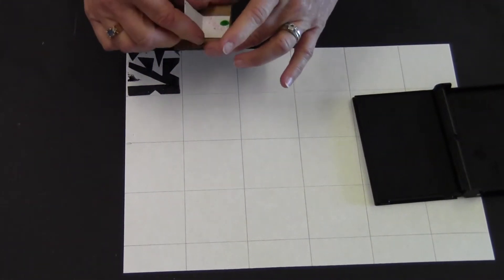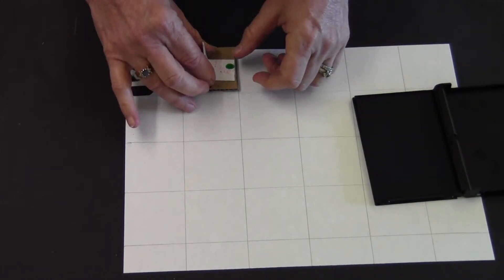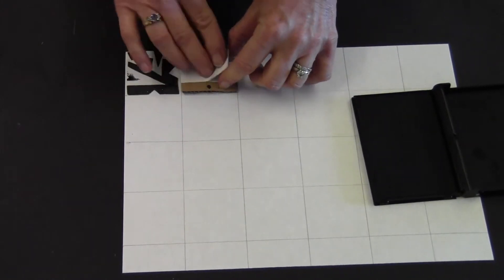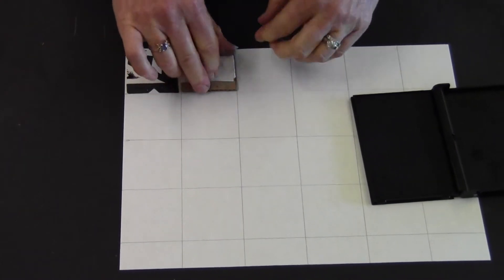I'm going to make one turn so that the dot is now facing in this direction. Press, lift up, back to the stamp pad, ink it up again.